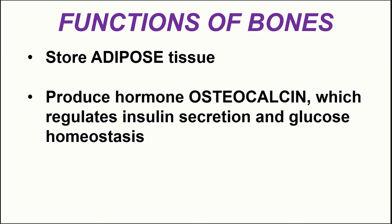Bones also, to a lesser extent, produce hormones. The primary hormone they produce is called osteocalcin, which functions in regulating insulin secretion. As you may know, insulin regulates the body's ability to uptake glucose. So osteocalcin functions in regulating insulin secretion as well as the homeostasis of glucose, which is our primary sugar fuel.